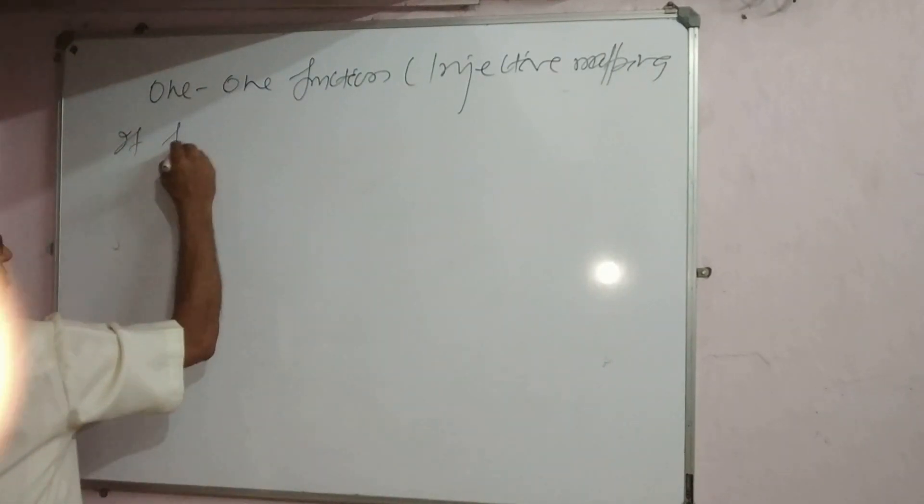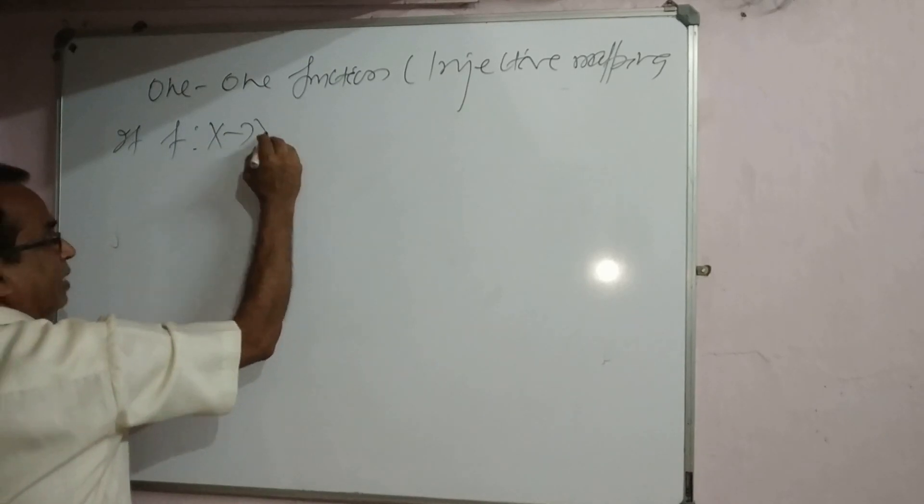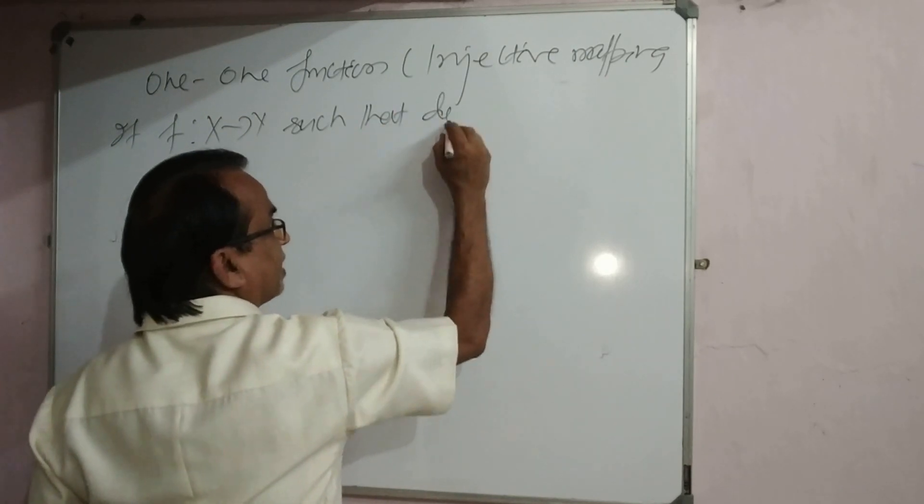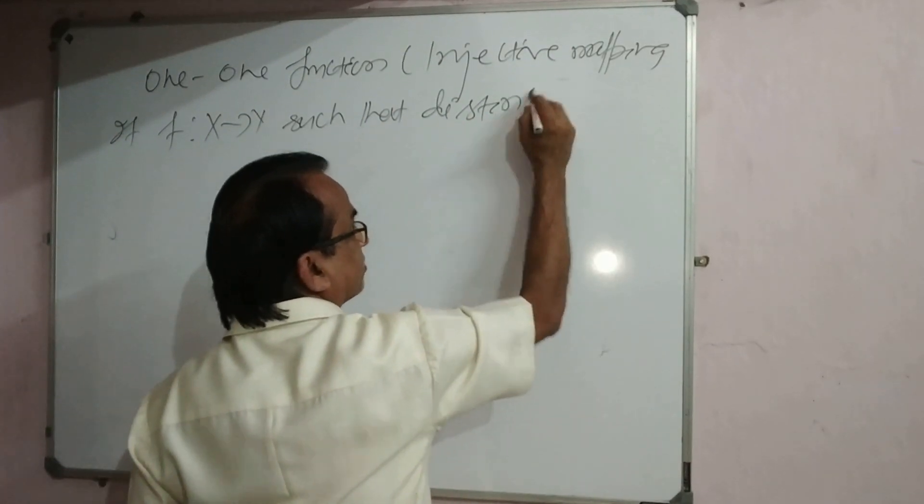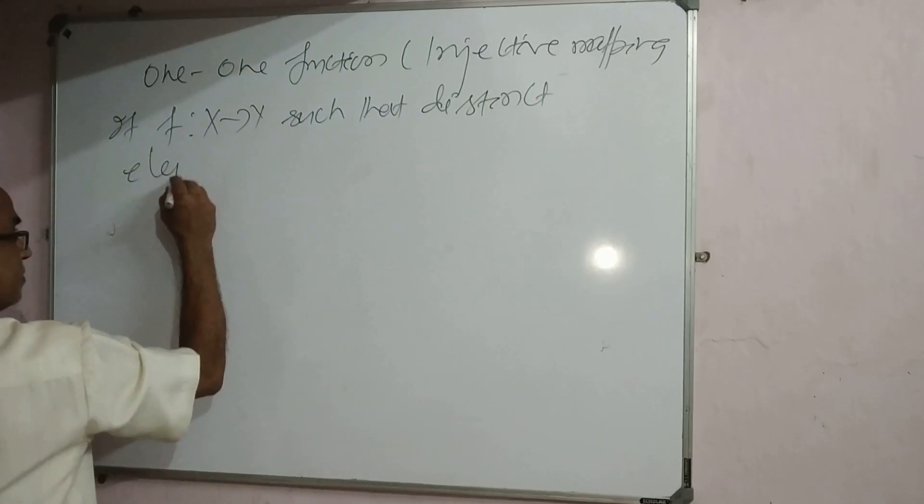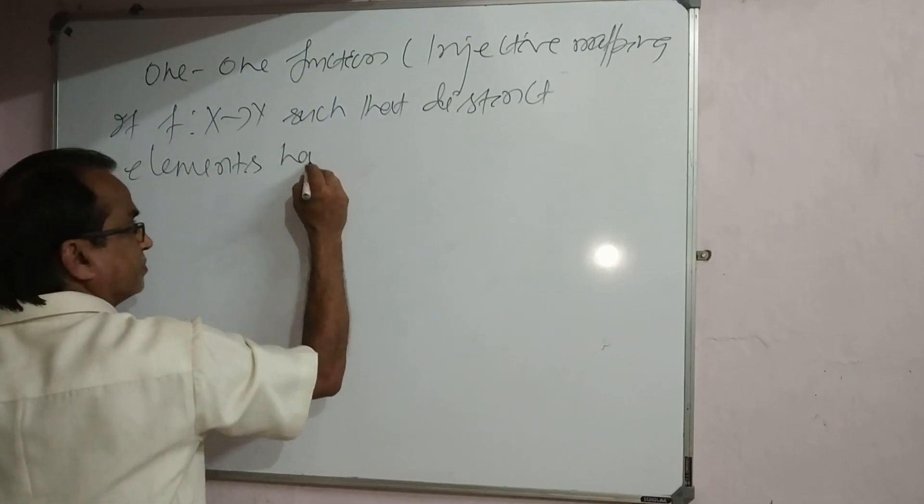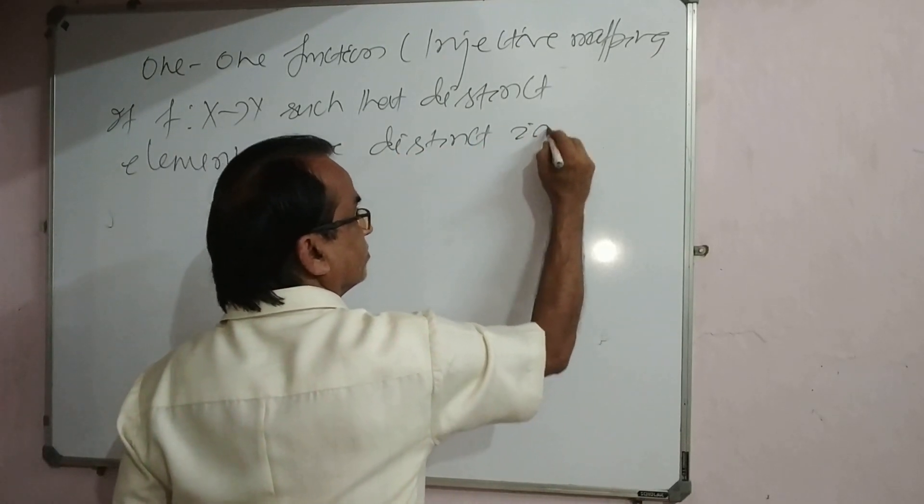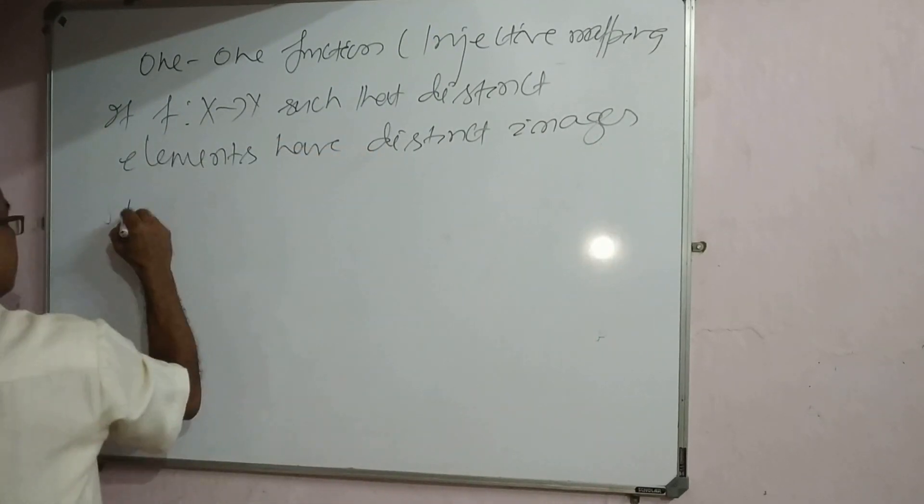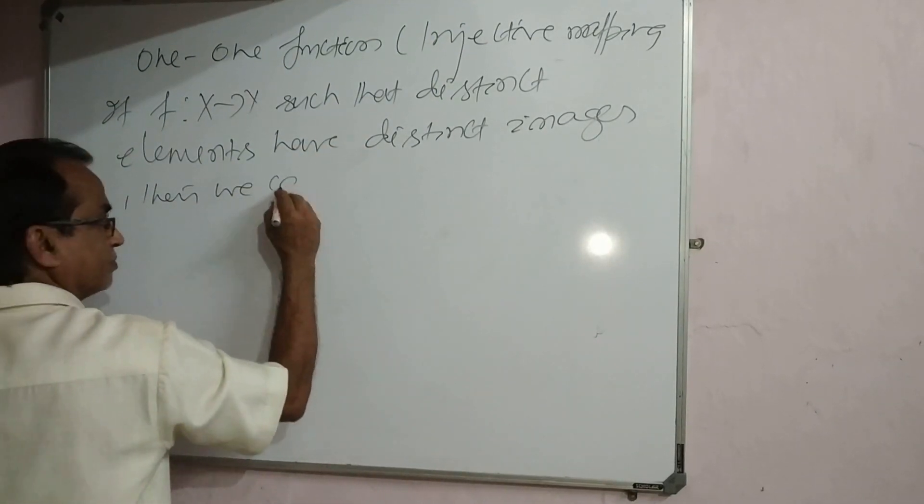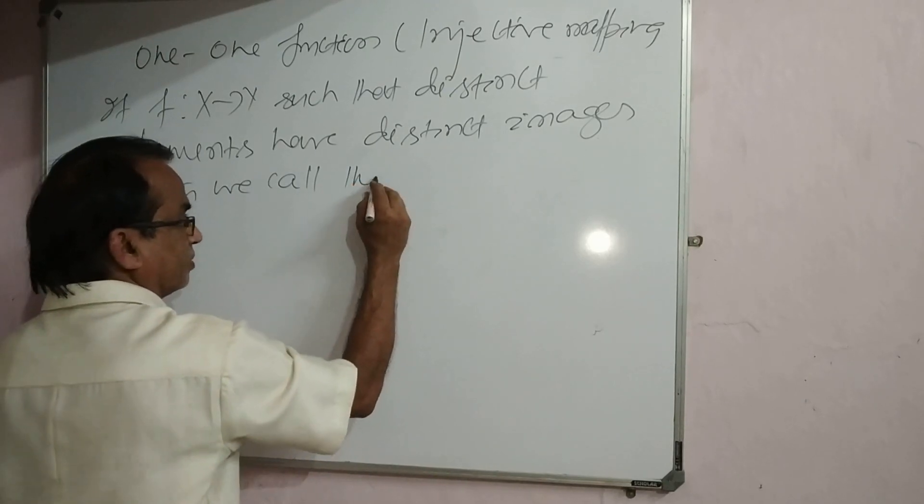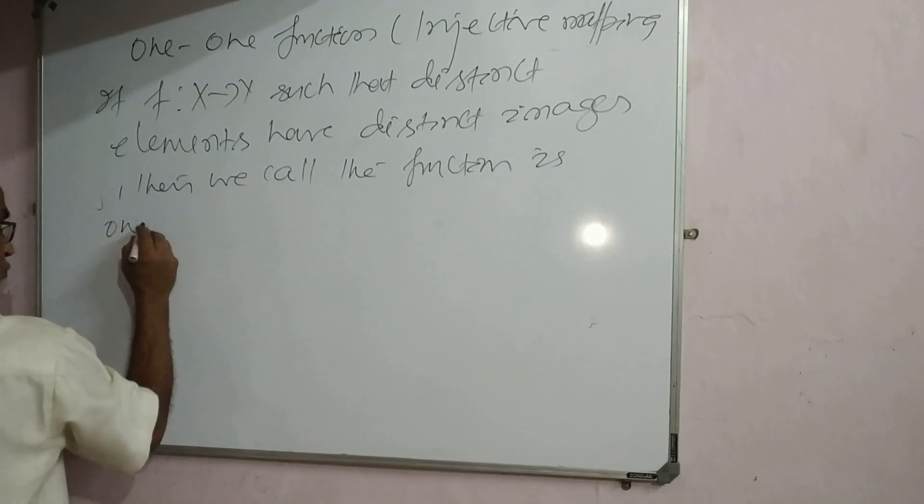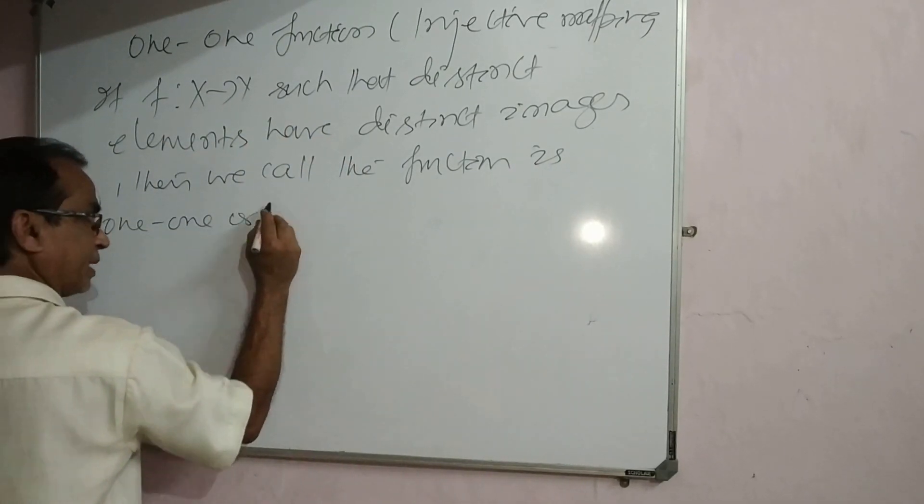If f is a function from X to Y such that distinct elements have distinct images, then we call this a one-one or injective function.